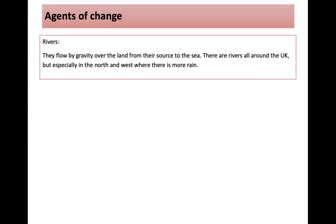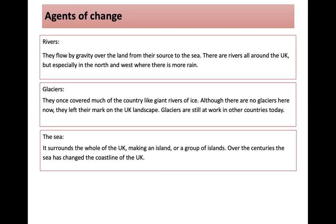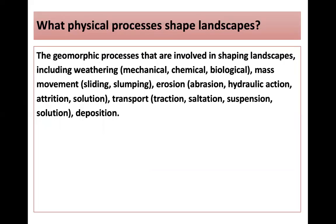There are three agents of change shaping our landscape. The first is rivers — they flow by gravity over the land from source to sea, and are found all around the UK, especially in the north and west where there's more rain. Glaciers were once like giant rivers of ice covering much of the country; although there are no glaciers here now, they left their mark on the UK landscape. The sea surrounds us, making us an island or group of islands, and over the centuries has changed our coastline. There are many physical processes shaping our landscape.